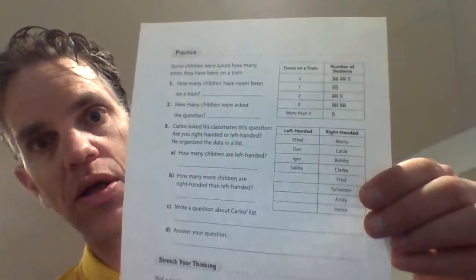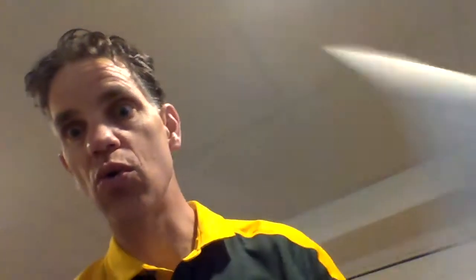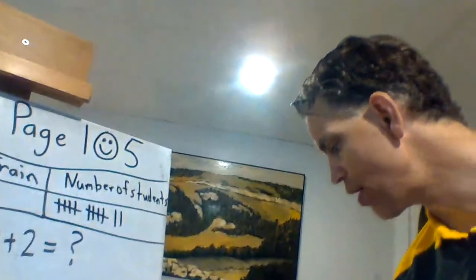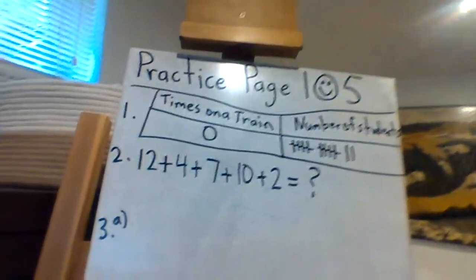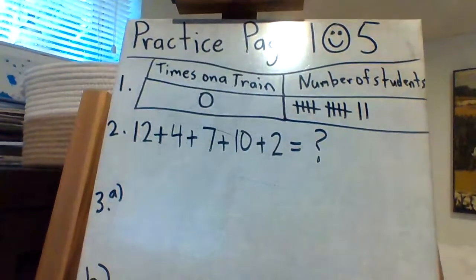Today on page 105 we are going to talk more about that. Yes, we're practicing. Here we go. Practice page 105. One hundred, zero tens, five ones.